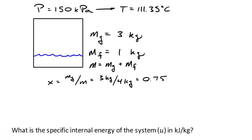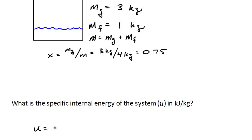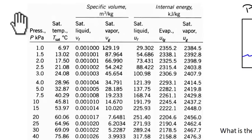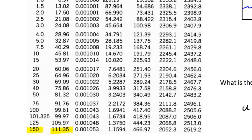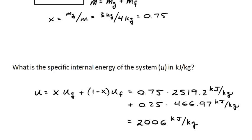Next, we find the specific internal energy u in kJ/kg. We use the relationship: u = x·u_g + (1−x)·u_f, where x is the quality, u_g is the internal energy of the vapor, and u_f is the internal energy of the liquid. Looking up these values from the saturated water table at 150 kPa and plugging in the numbers gives a specific internal energy of just over 2000 kJ/kg.